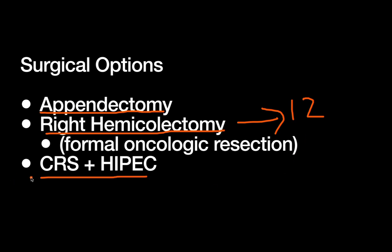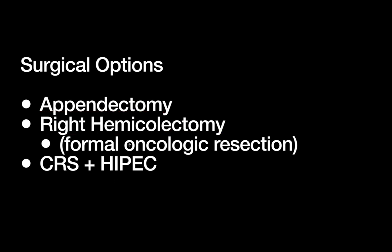And then the biggest option is CRS and HIPEC on top of the right hemicolectomy — cytoreductive surgery and intraperitoneal chemotherapy. These are used in situations where there are concerns for peritoneal spread, which often happens in these particularly mucinous appendiceal tumors. We'll talk about that in more detail later. Just remember your surgical options from least to most invasive: appendectomy, then a formal oncologic resection with a right hemicolectomy, and then on top of that, cytoreductive surgery and HIPEC.